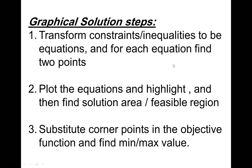The graphical solution has three steps. Step one: transform constraints to be equations and for each equation find two points. Step two: plot the equations and highlight according to the sign to find the solution area — the feasible region. The feasible region is the region satisfying all the constraints in the graph.